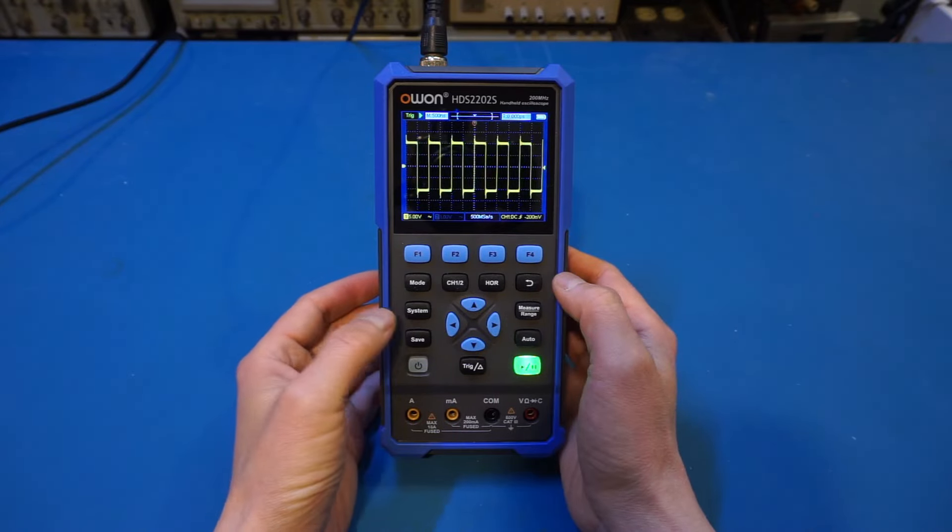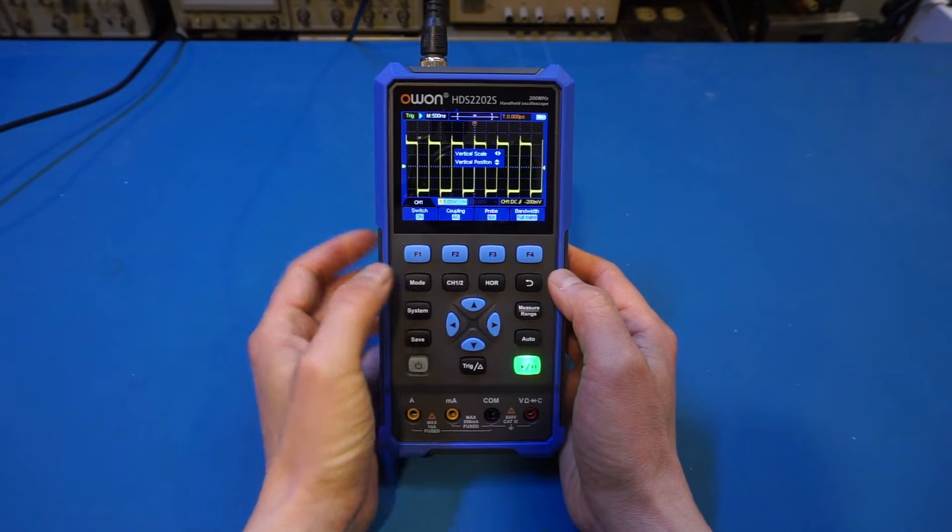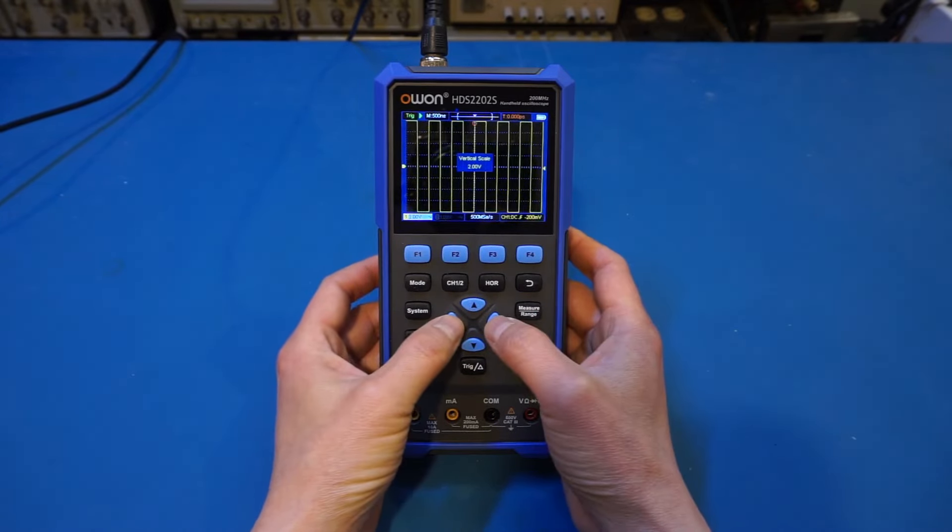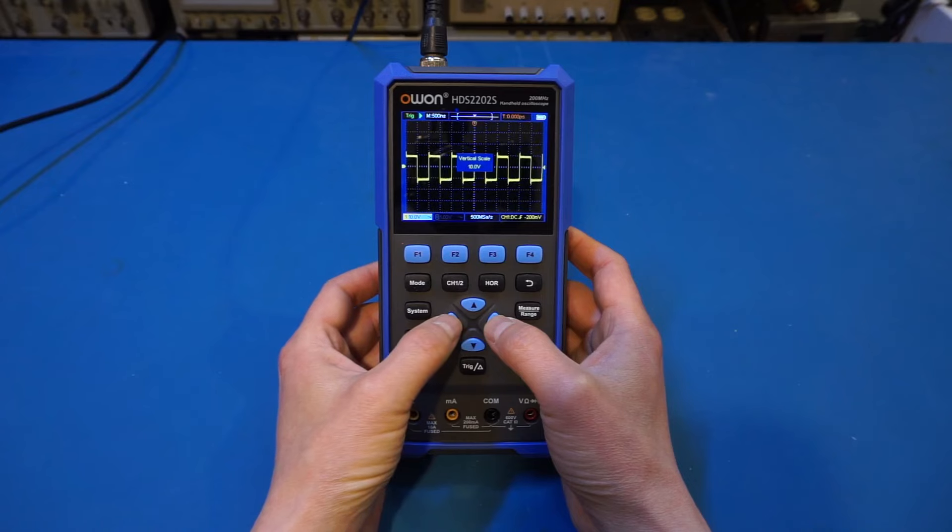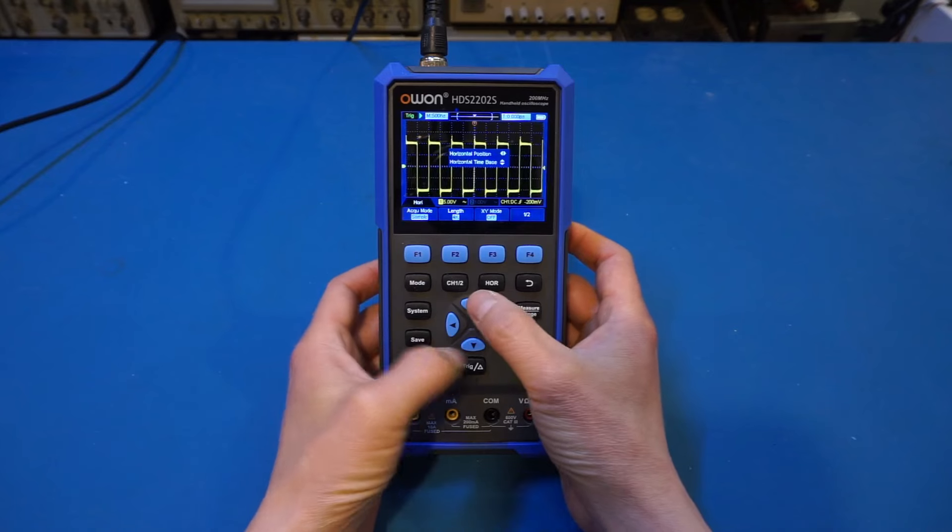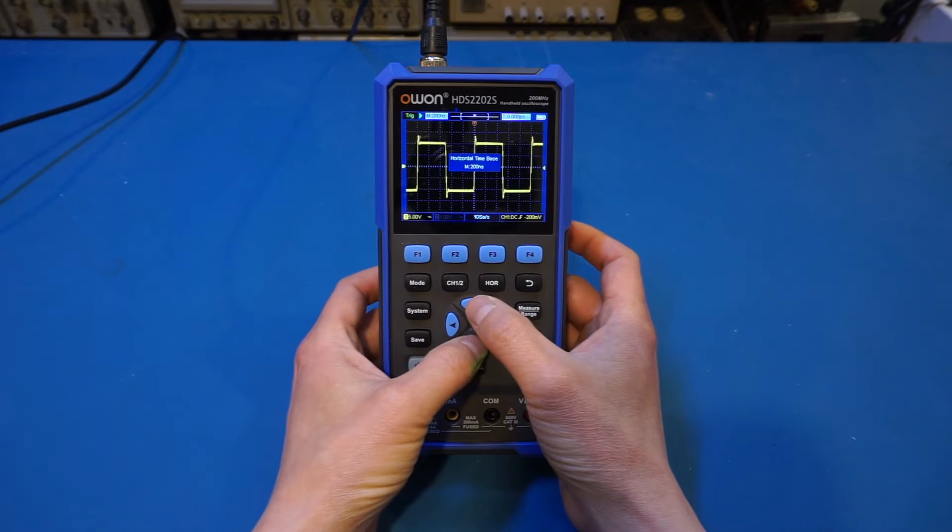At 500 nanoseconds, you can see that it changes to 500 megasamples per second. So that's how you change the horizontal. Now, to change the vertical, you have to press the channel button. Right now we're on channel 1, so you can see that vertical scale. You can change it using those two buttons as well. So that is no problem at all.